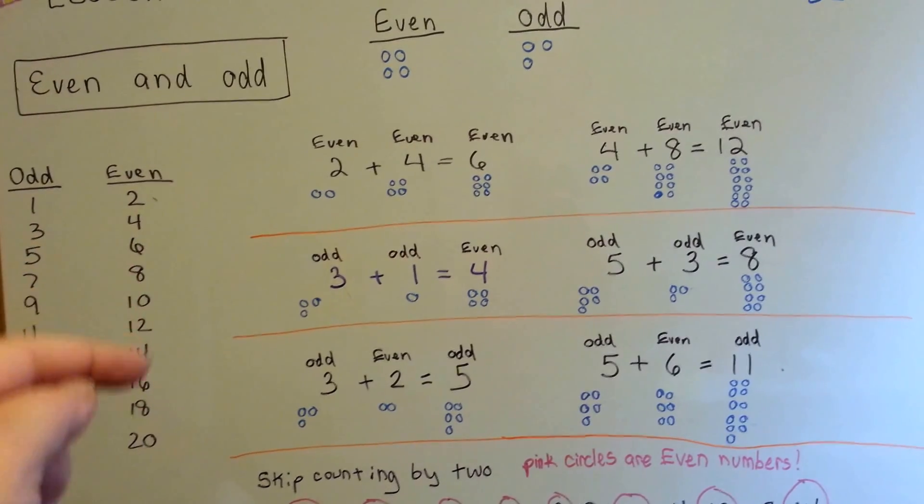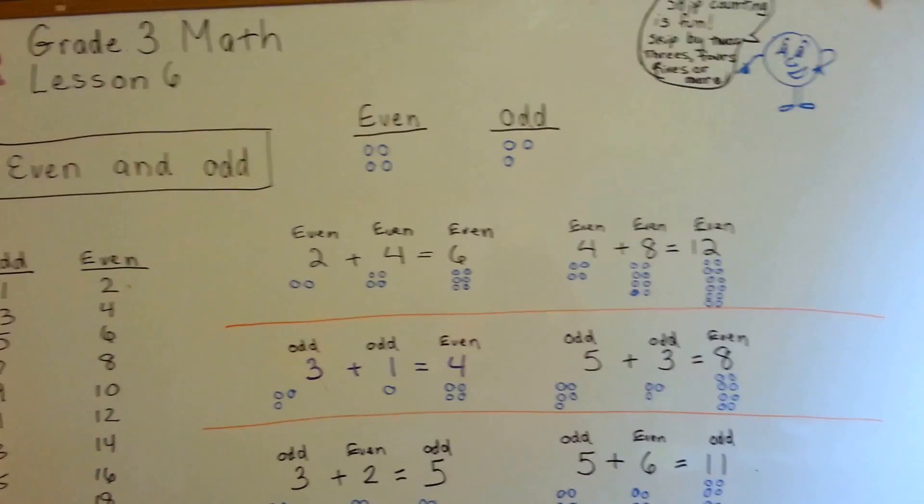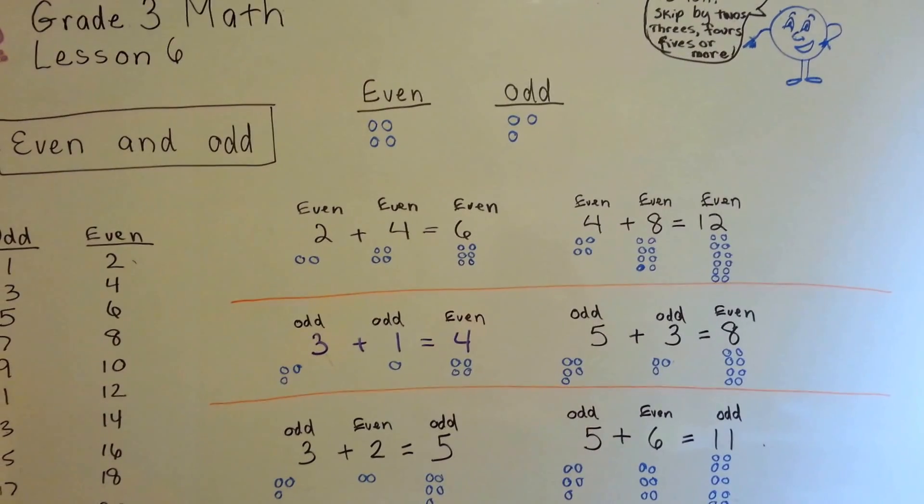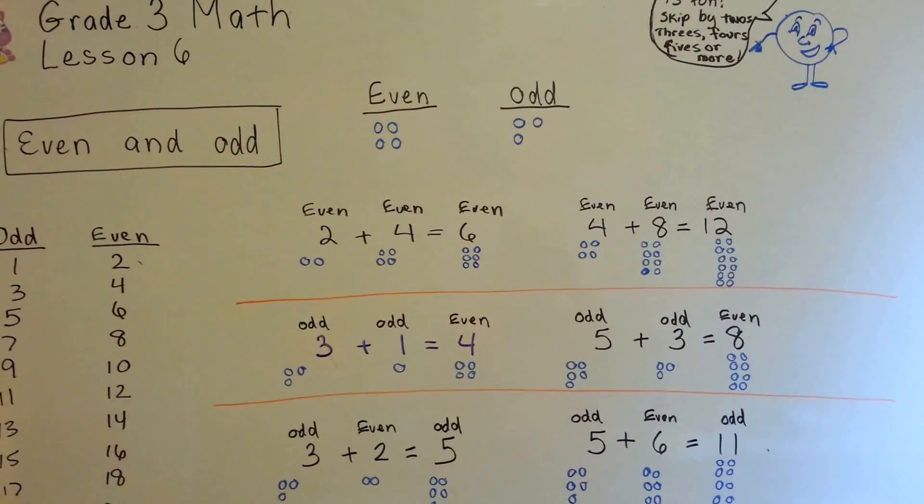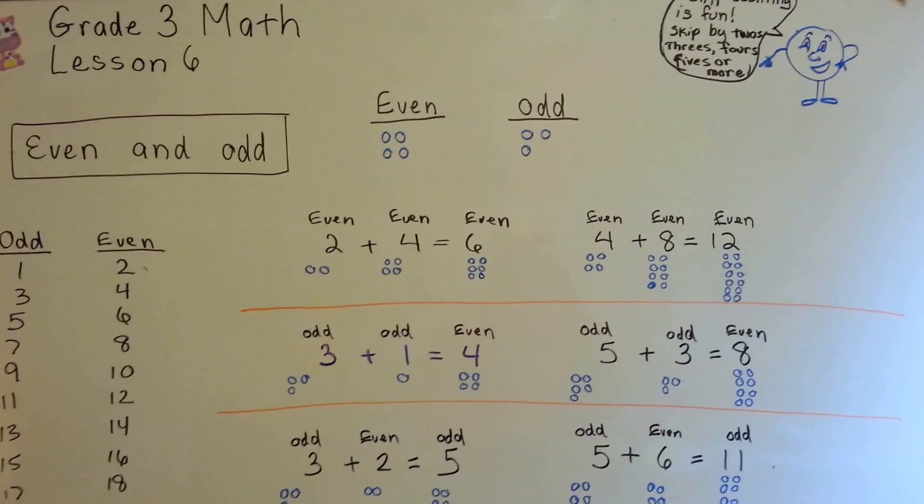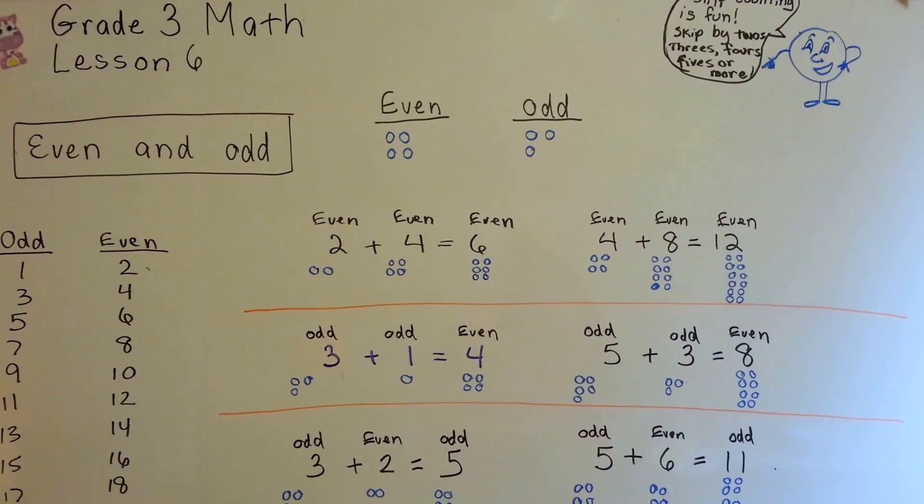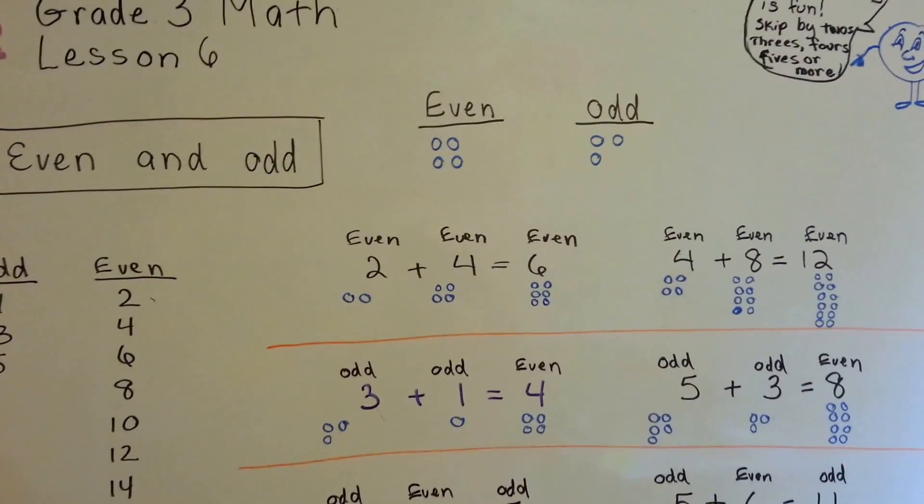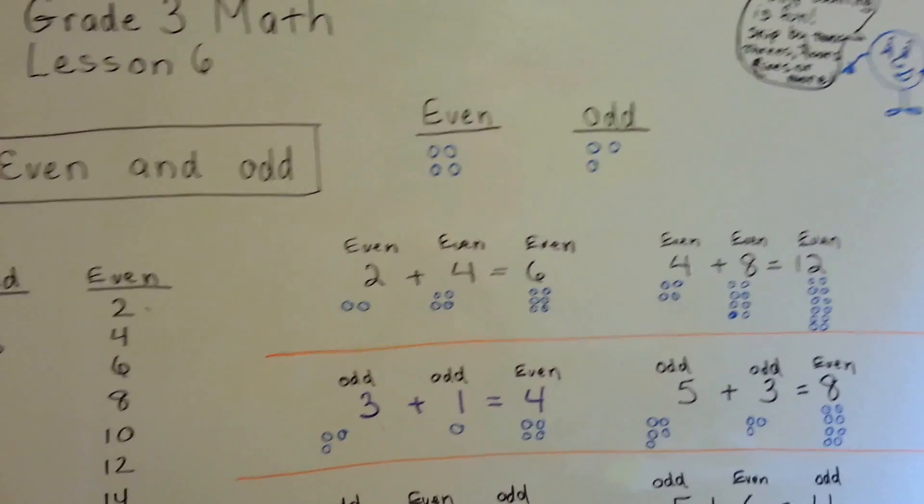and 0, 2, 4, 6, 8 is the evens. So that's even and odd. You can try skip counting by twos, threes, fours, fives, or any number you want. You can skip count by 10. You could skip count by 100. Try to figure out which ones are even and which ones are odd. That's our lesson today. I'll see you for our next one. Bye!